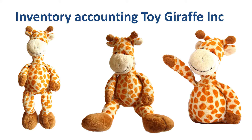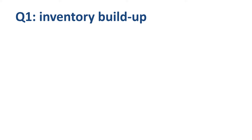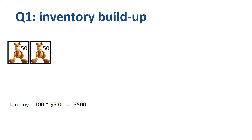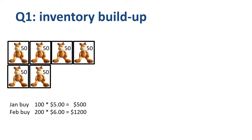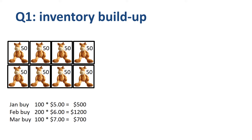In the first quarter of the year, Toy Giraffe Inc. is building up its inventory. In January they buy 100 units, packed in 2 boxes of 50 units each, at $5 per unit. In February 200 units, 4 boxes of 50 units, at $6 per unit. The Q1 ending inventory is 400 units at a total purchase price of $2,400, so on average $6 per unit.